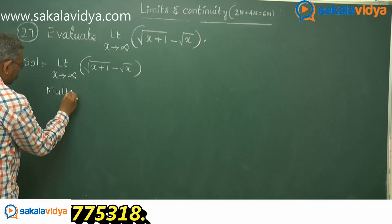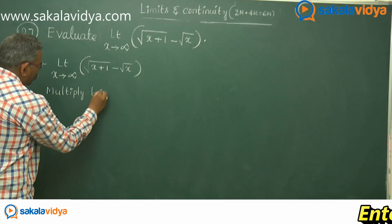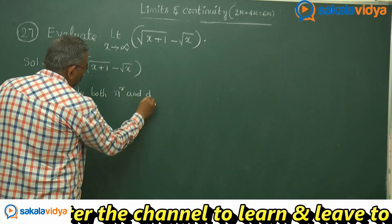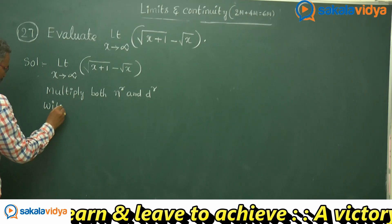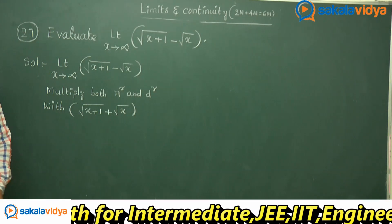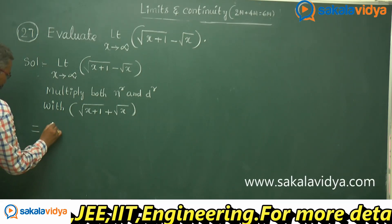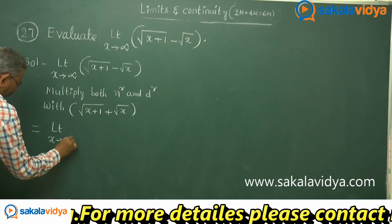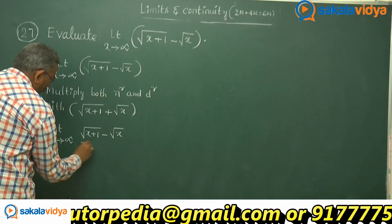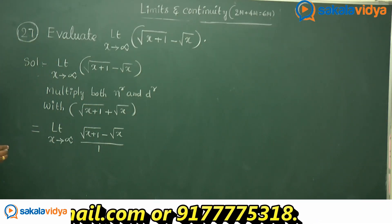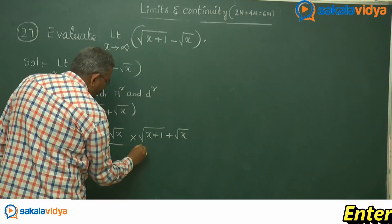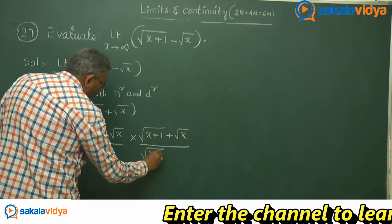Multiply both numerator and denominator with root of x plus 1 plus root x. So this equals limit x tends to infinity of root of x plus 1 minus root x, divided by 1, multiplied by root of x plus 1 plus root x, divided by root of x plus 1 plus root x.